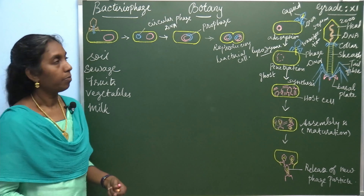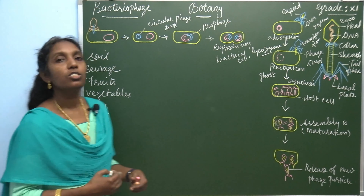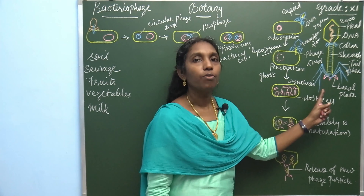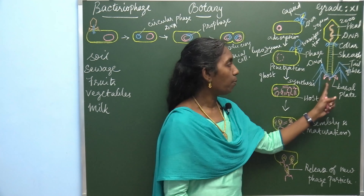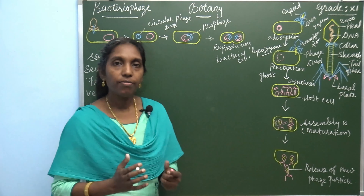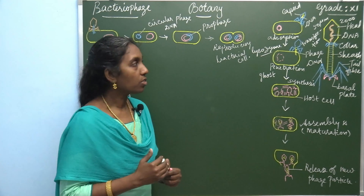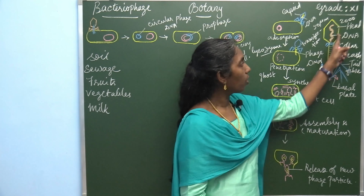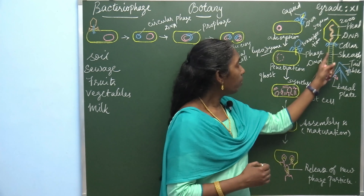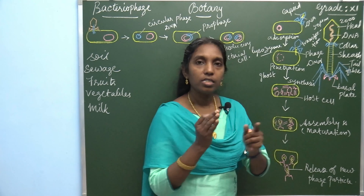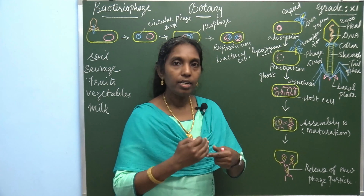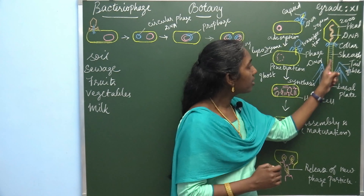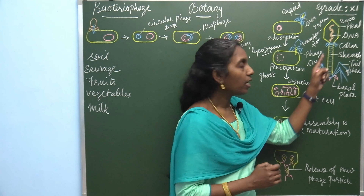Let's see the structure of bacteriophage. Look at this diagram. This is the structure of T4 bacteriophage. The T4 bacteriophage consists of a head part — a hexagonal head — followed by a tail. The tail consists of an inner central core and sheath. The head and tail are connected by a collar.